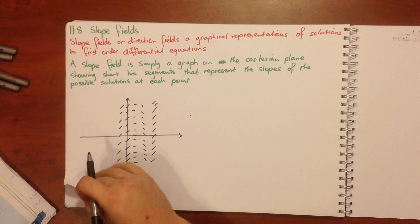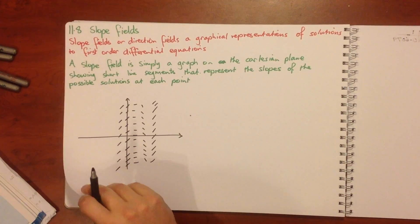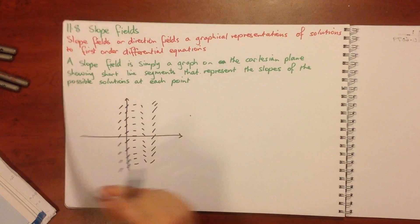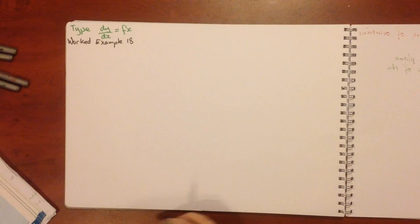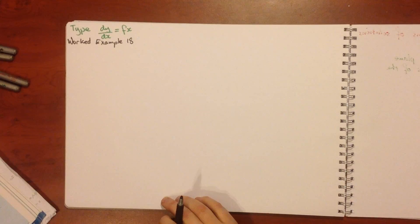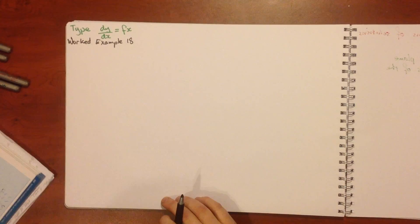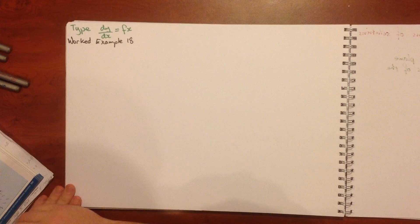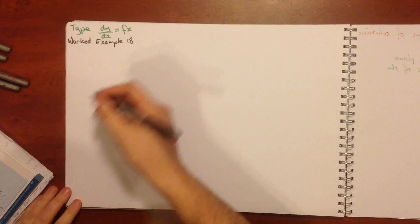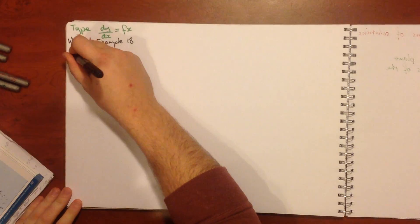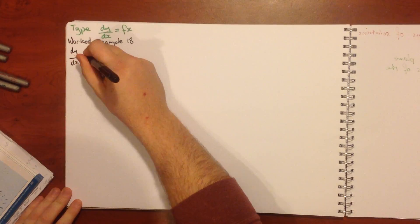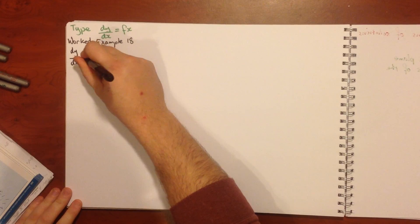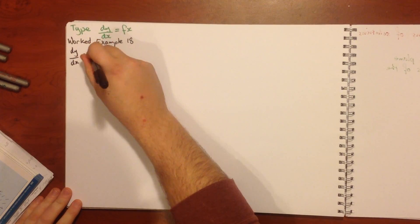We can do these for Type 1, Type 2, and Type 3 differential equations, and there is a worked example of each type. With Example 18, we want to sketch the slope field of the differential equation dy/dx equals x on 2.